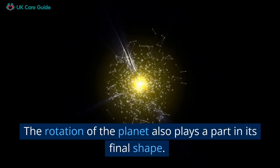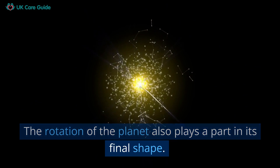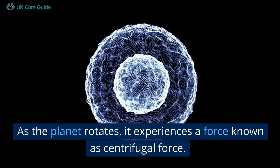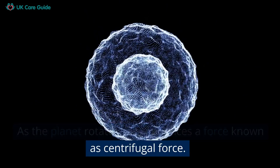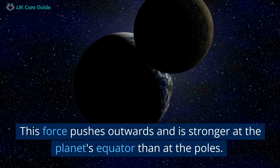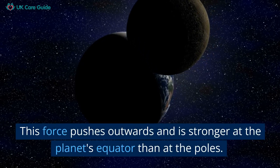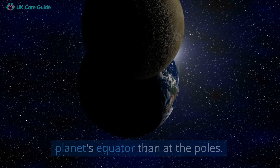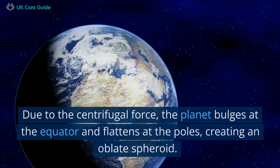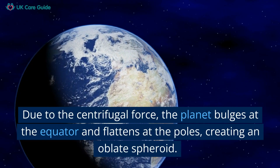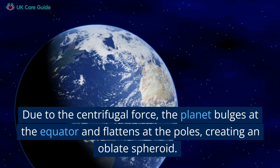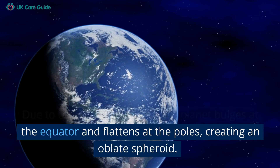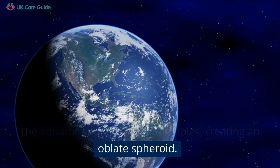The rotation of the planet also plays a part in its final shape. As the planet rotates, it experiences a force known as centrifugal force. This force pushes outwards and is stronger at the planet's equator than at the poles. Due to the centrifugal force, the planet bulges at the equator and flattens at the poles, creating an oblate spheroid.